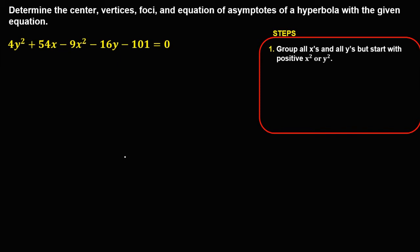First, we need to group all x and all y, but start with the positive x squared or y squared. Since in this given equation y squared is positive, therefore the first group is all y. And since this one is positive y squared, this hyperbola is in vertical position.